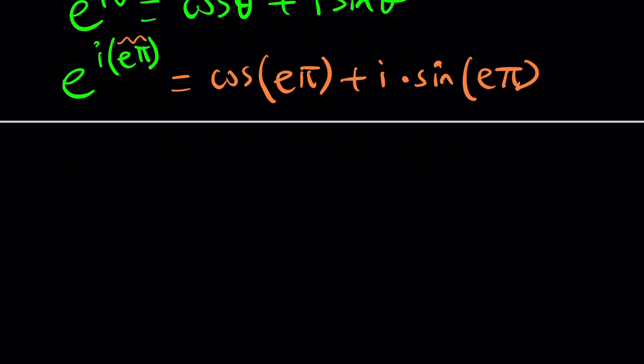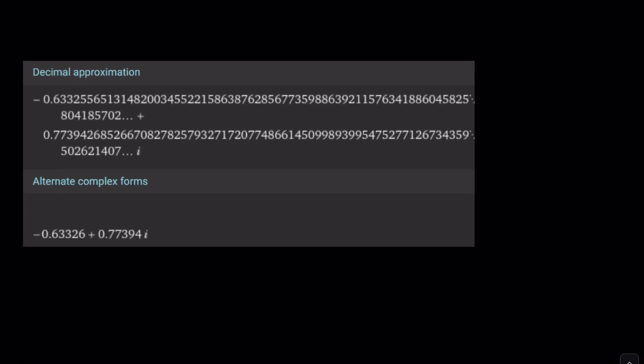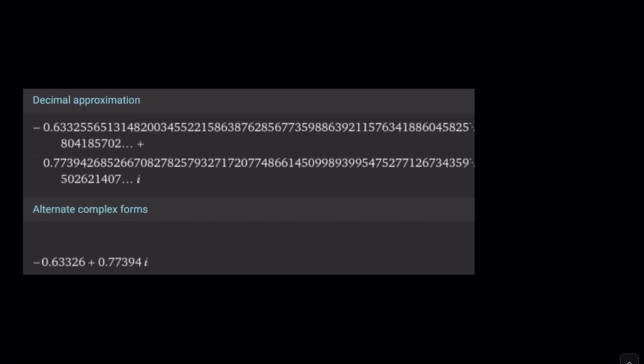And now negative 1 to the power e. Are you ready? Drum roll. Is equal to this. There's some approximation, but you can also write it roughly like this. Just a complex number. And this brings us to the end of this video.